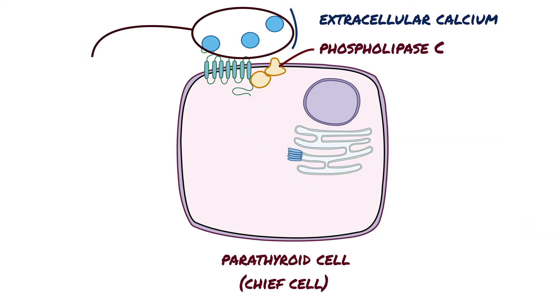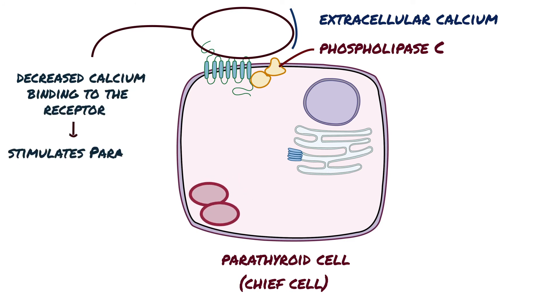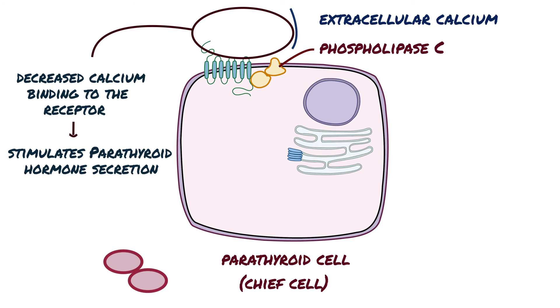When extracellular calcium is decreased, there is decreased calcium binding to the receptor, which stimulates parathyroid hormone secretion.